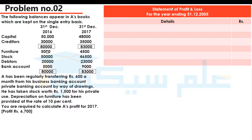Furniture is Rs. 4,500 closing. Stock Rs. 50,000 opening and Rs. 46,500 closing. After that, debtors are Rs. 20,000 opening and Rs. 23,000 closing. Bank account or cash at bank Rs. 5,000 opening and Rs. 9,000 closing. Closing capital is Rs. 48,000 and creditors Rs. 35,000.